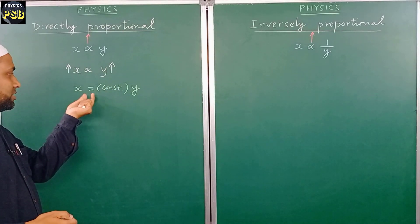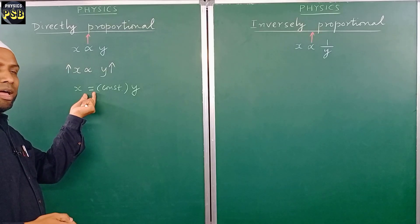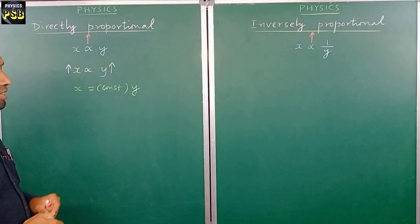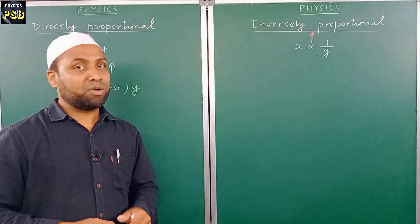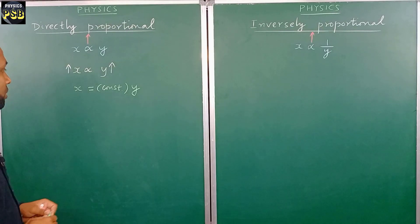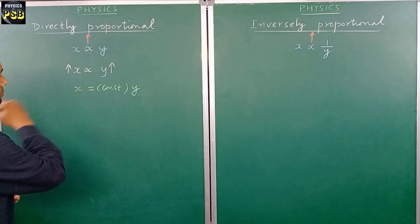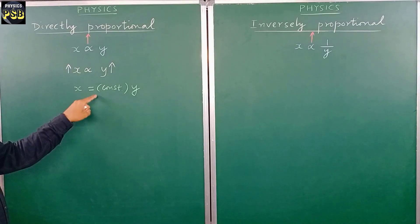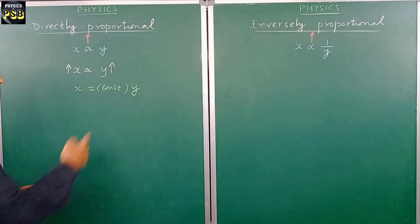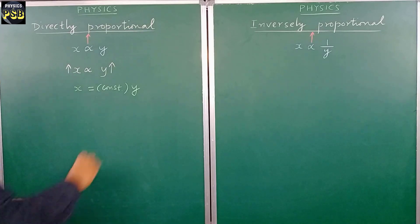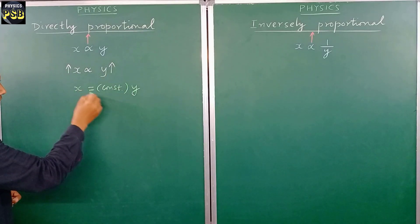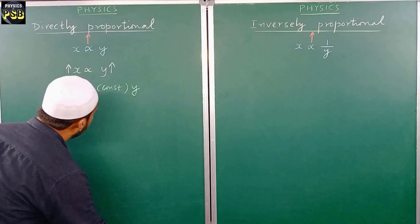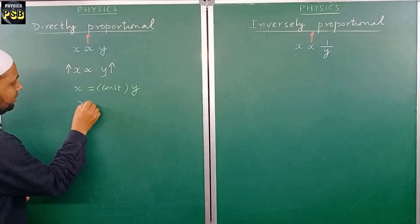An expression in which there is an equal-to sign, and certain terms are present on both sides, is called an equation. Now, to make my work easier, I replace this constant — which is called the proportionality constant — with a symbol. Let it be k. I replace this proportionality constant with k for convenience.